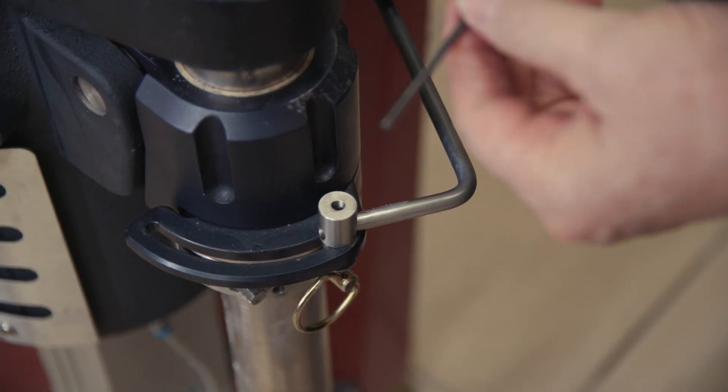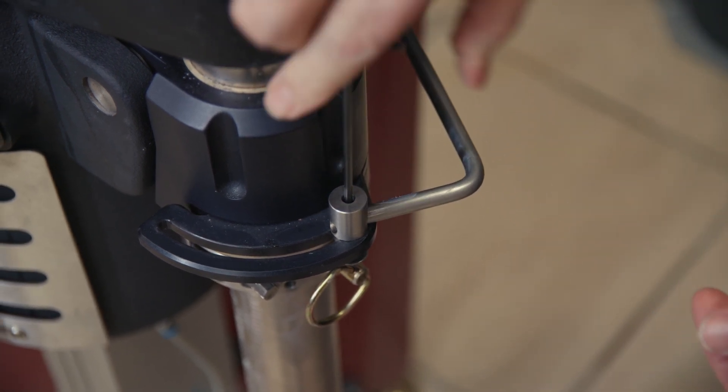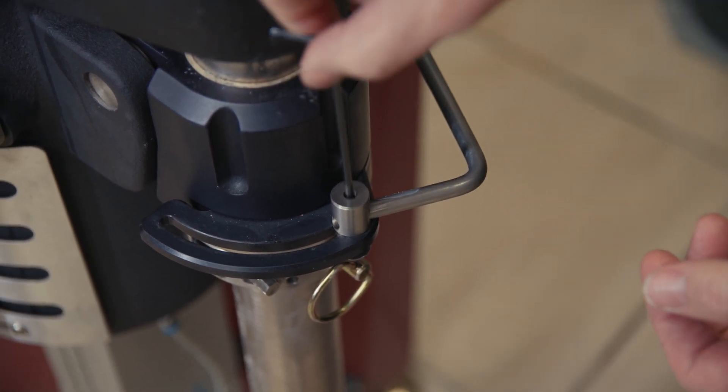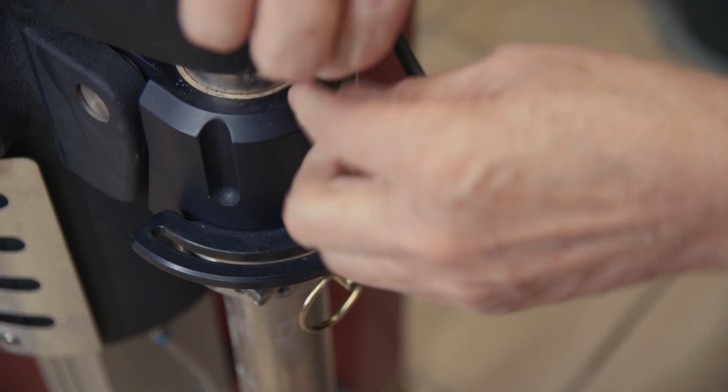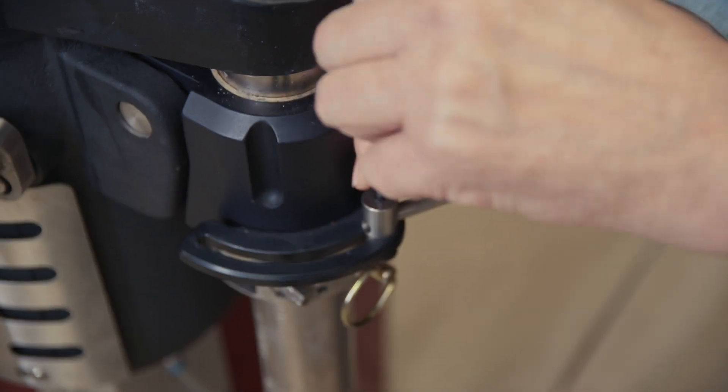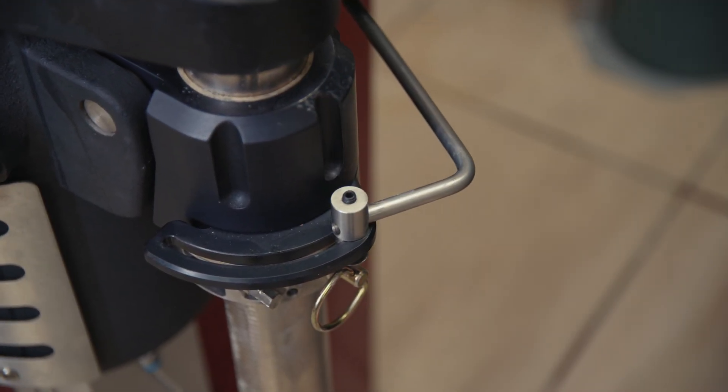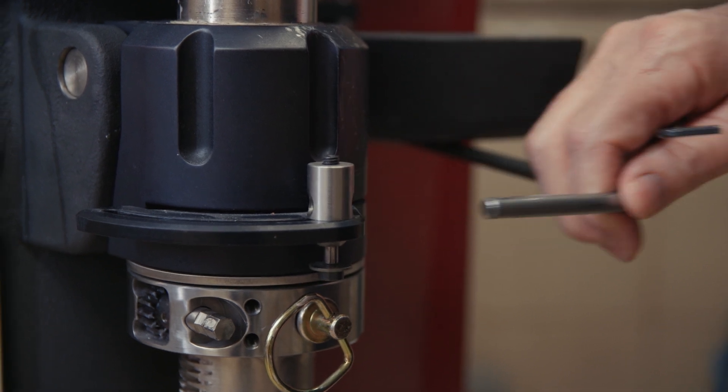Next we're going to take this 3mm wrench and go down in here. There's a screw down here in the bottom, and you're going to back this out a long way. It's got to come out to where it's extended at the top, like that. Then you're going to pull this arm out.